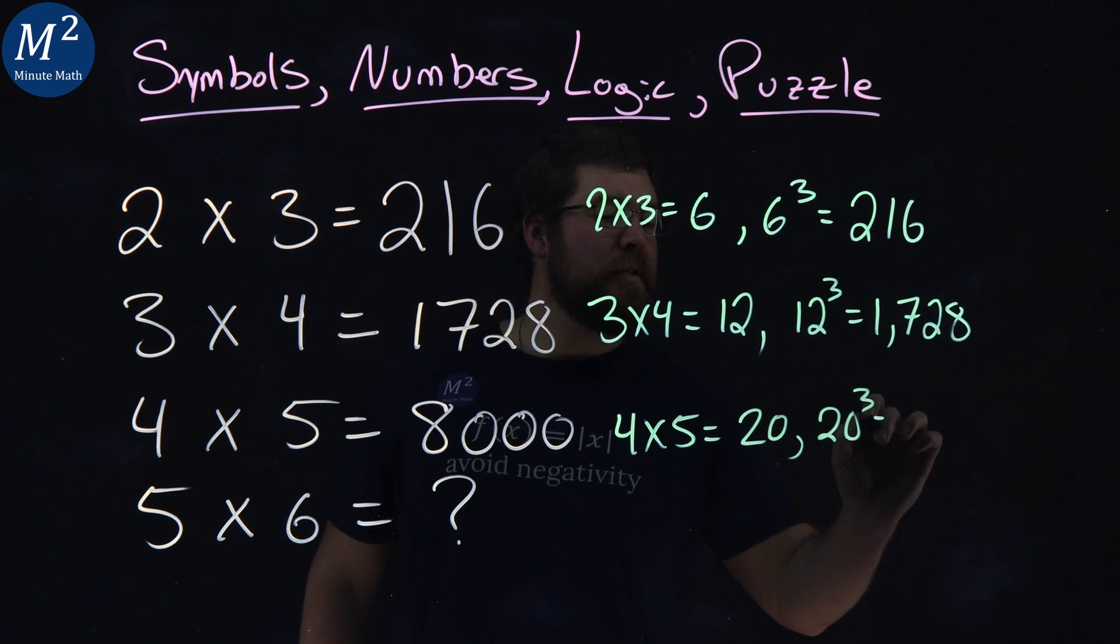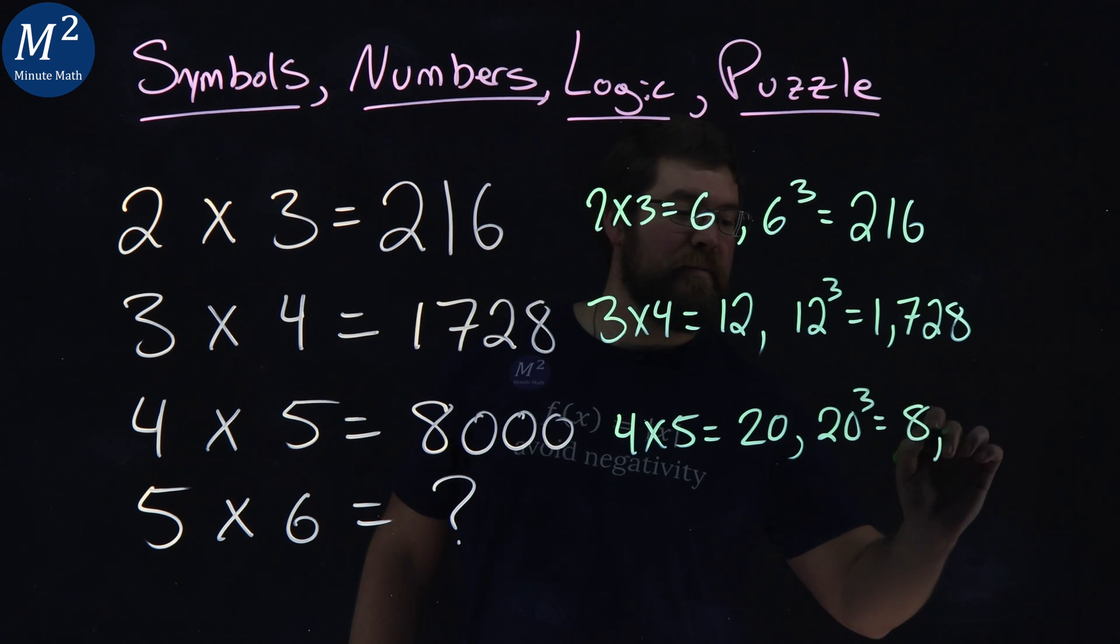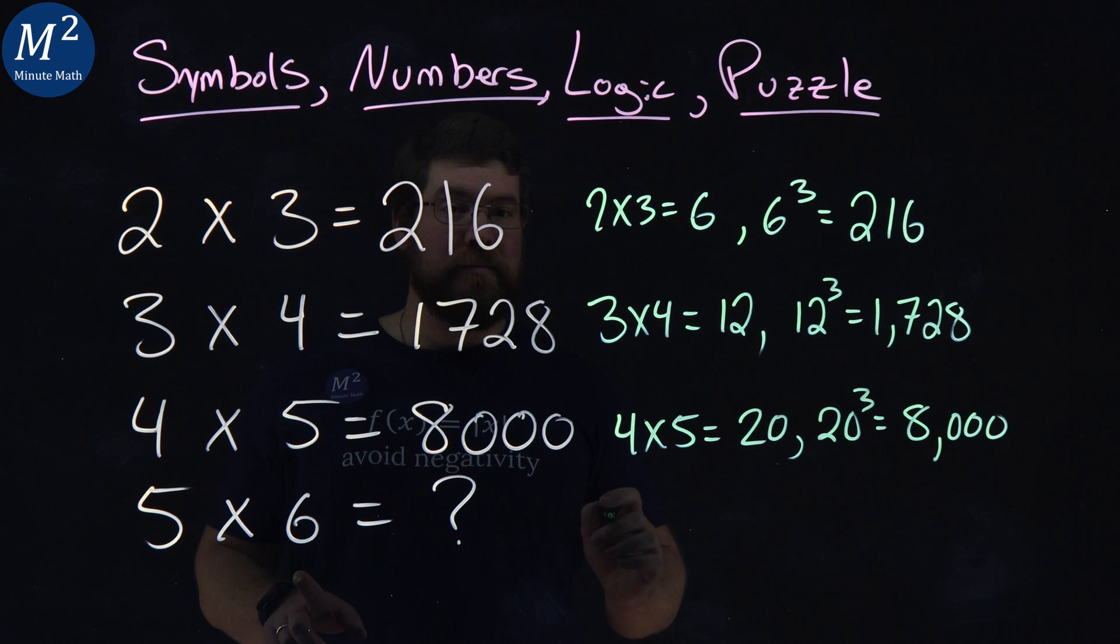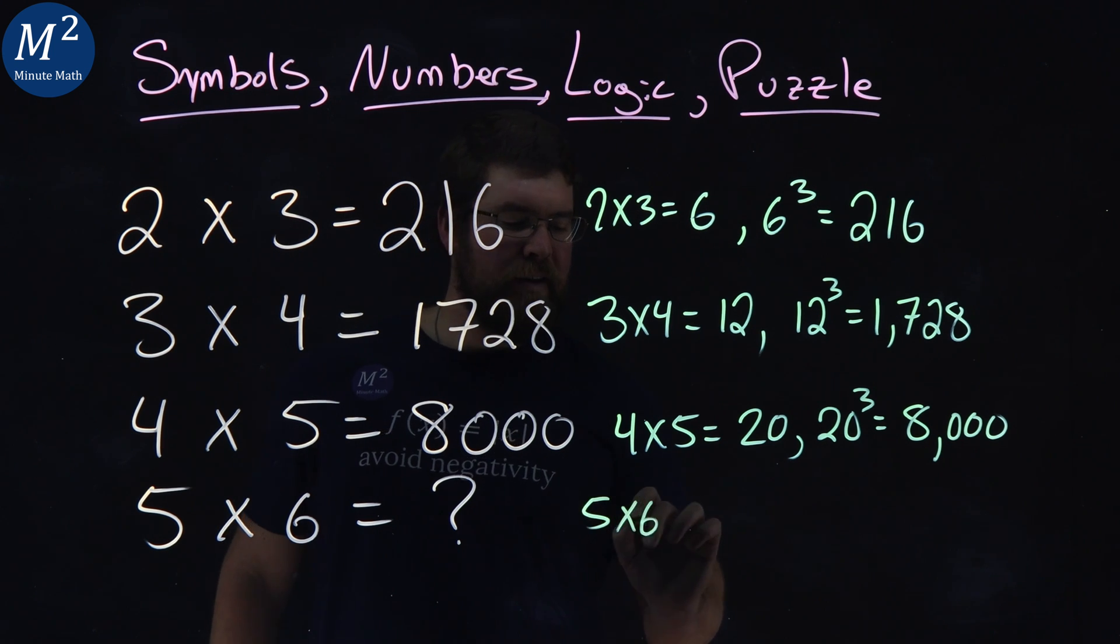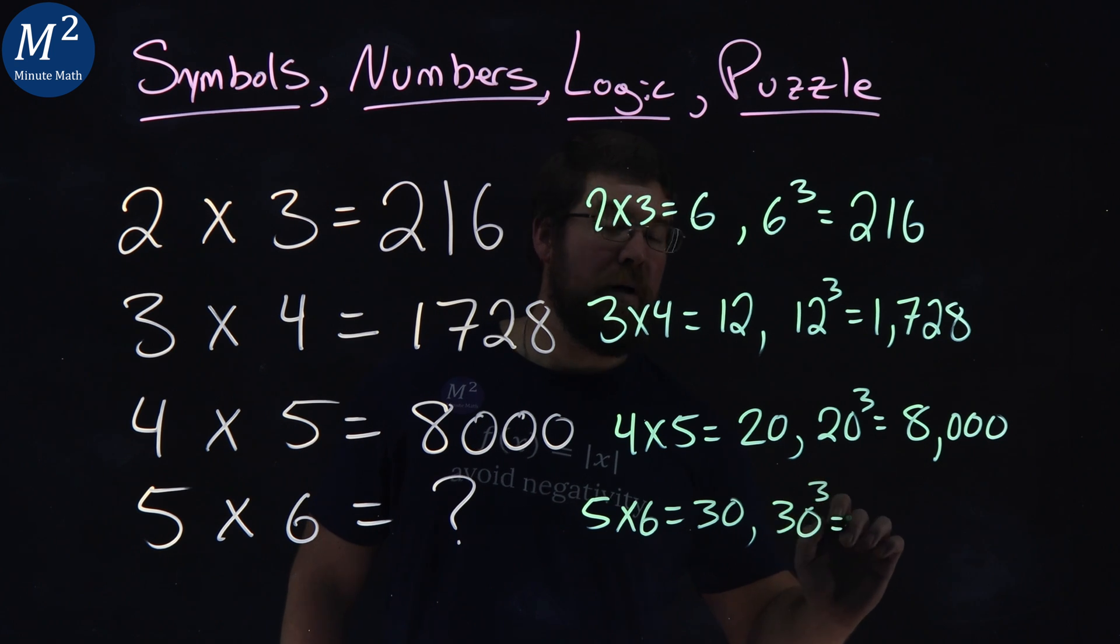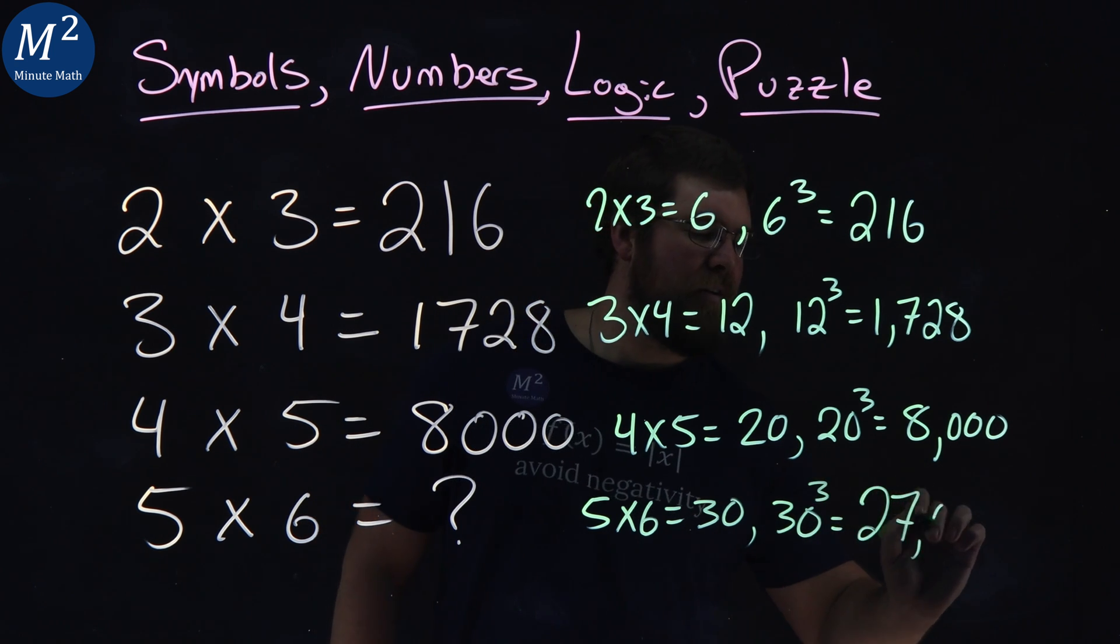20 cubed is 8,000. So I didn't really lie to you in the beginning. 5 times 6 is 30, but 30 cubed is 27,000.